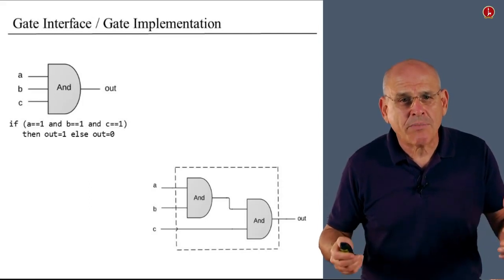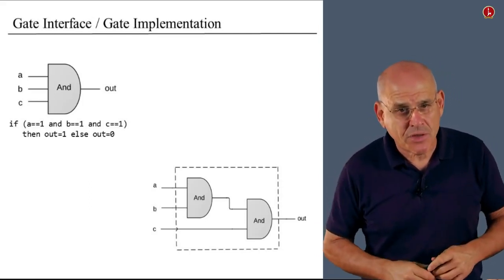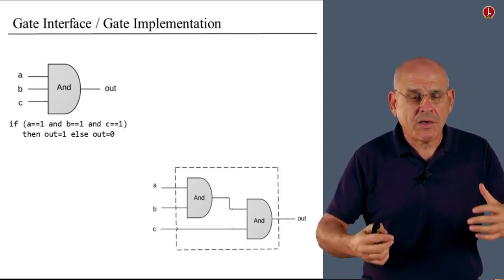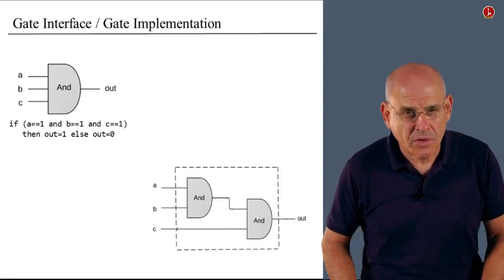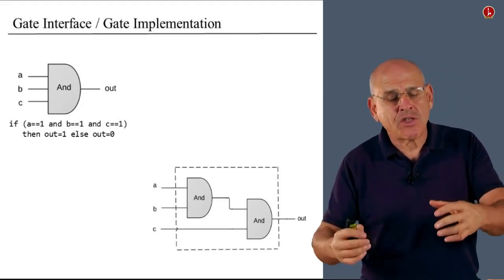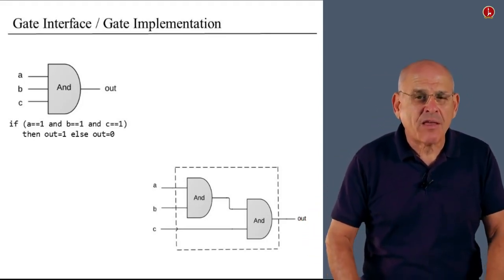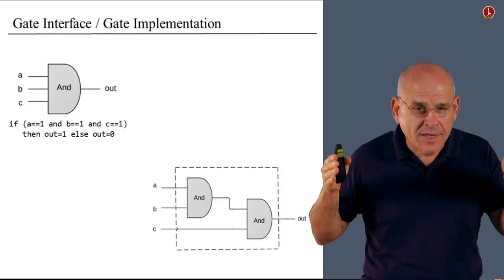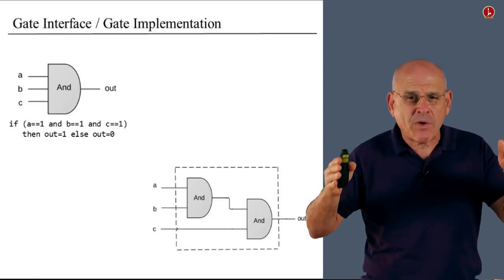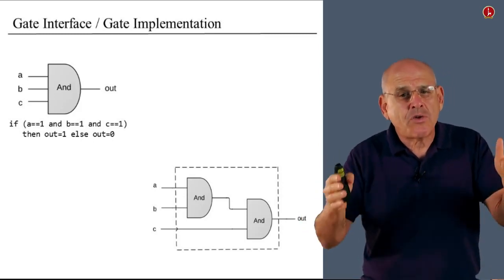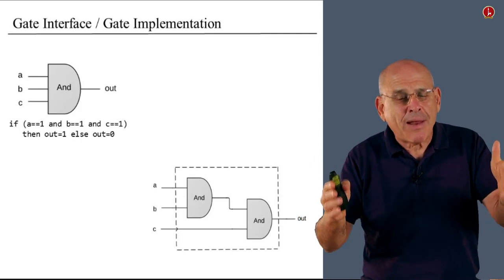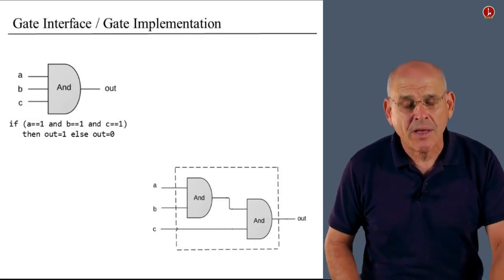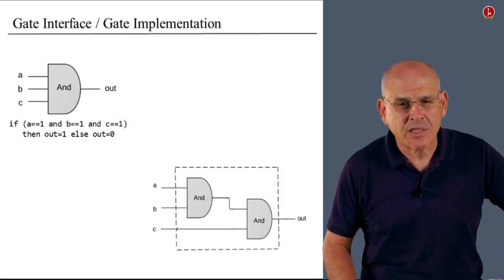The gate interface is the gate abstraction. This is how the user thinks about what the gate is supposed to do. Interface answers the question, what? At the same time, if you want to understand how the chip is doing what it's doing, you have to go to another level of detail in which the black box opens up, and you see how the chip is actually constructed. Or you do it yourself, if your job is to be the person who is actually realizing this abstraction.